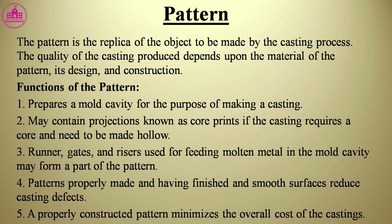The pattern is the replica of the object to be made by the casting process. The quality of the casting produced depends upon the material of the pattern, its design, and construction. Functions of the pattern: it prepares a mold cavity for the purpose of making a casting. It may contain projections known as core prints if the casting requires a core and needs to be made hollow. Runners, gates, and risers used for feeding molten metal in the mold cavity may form a part of the pattern. Patterns properly made with finished and smooth surfaces reduce casting defects.